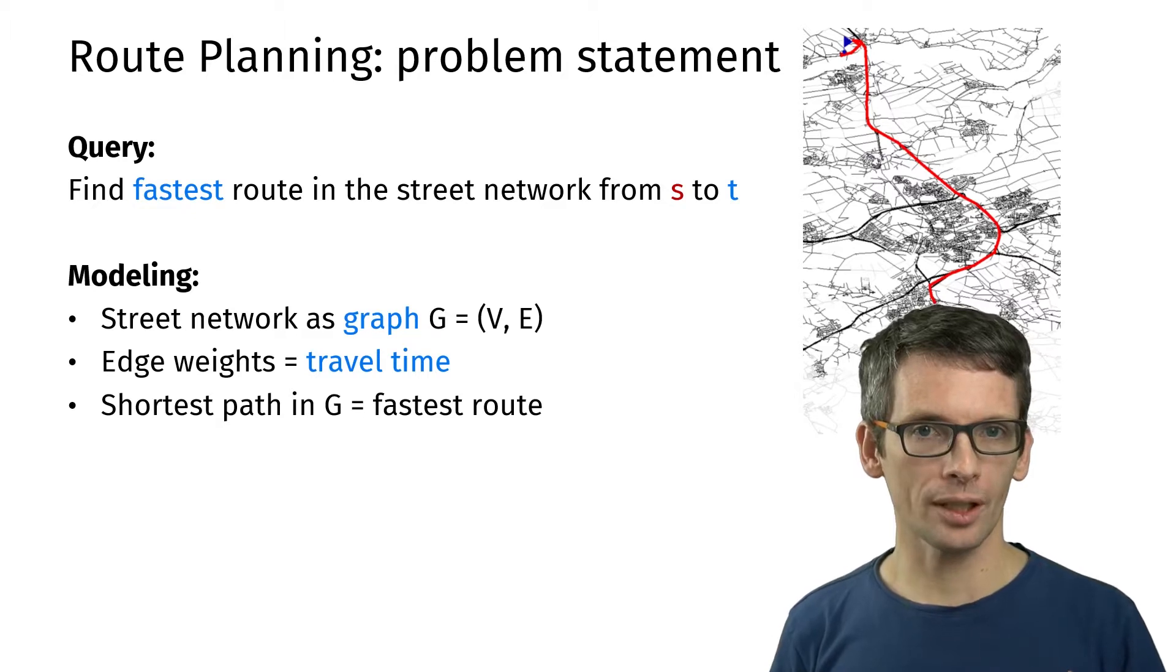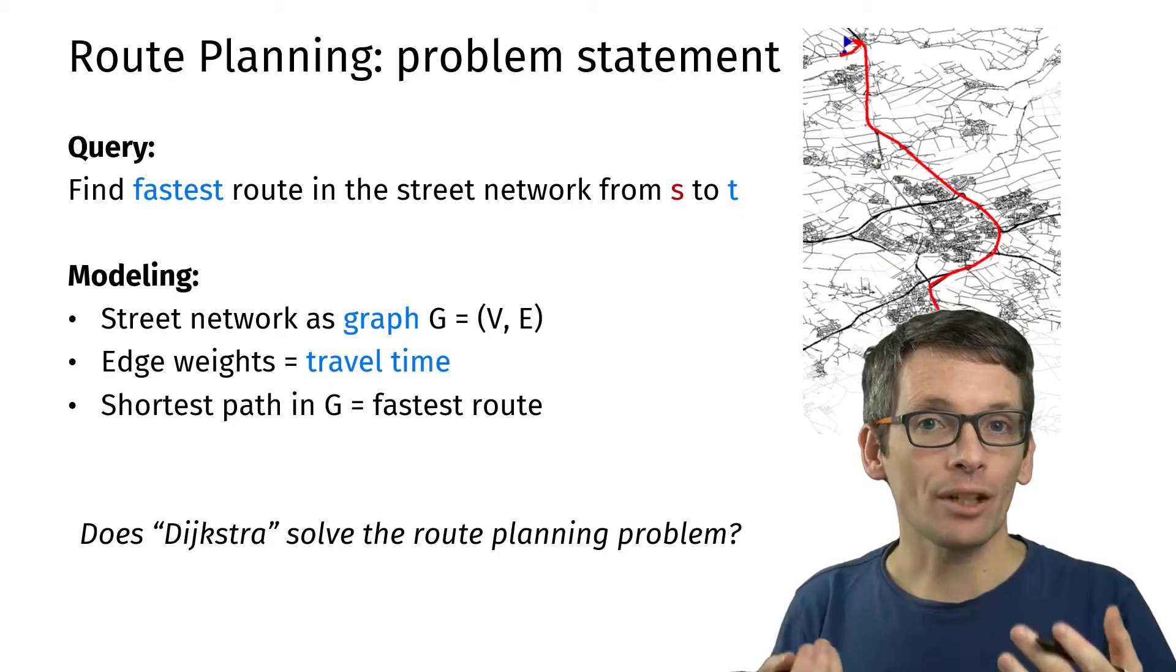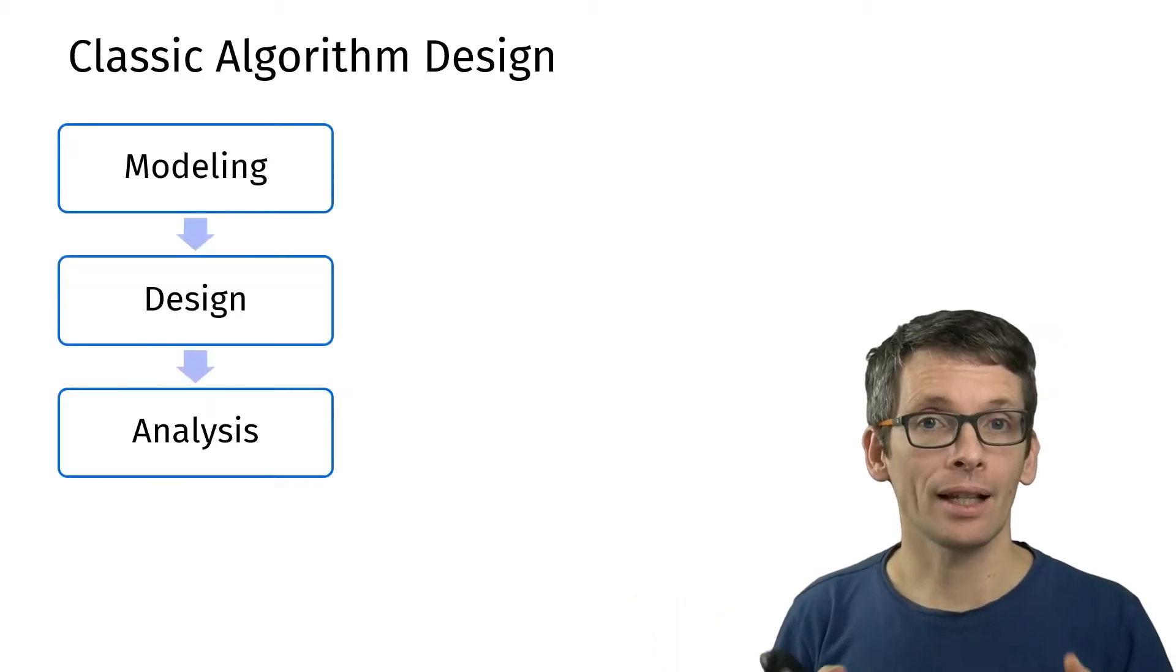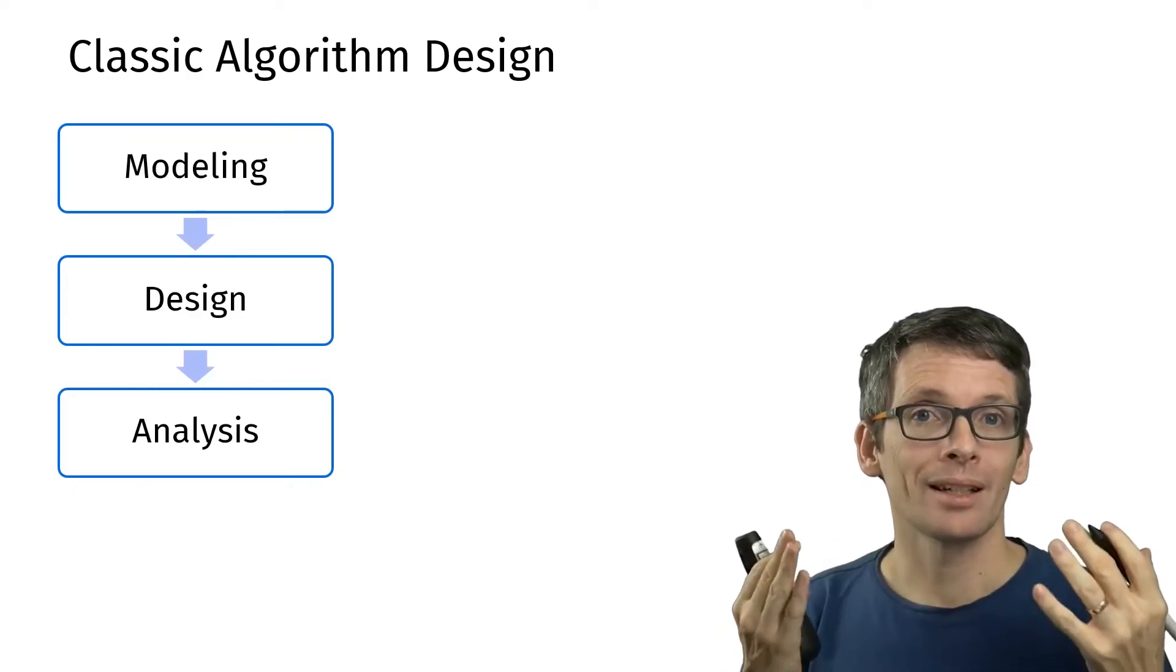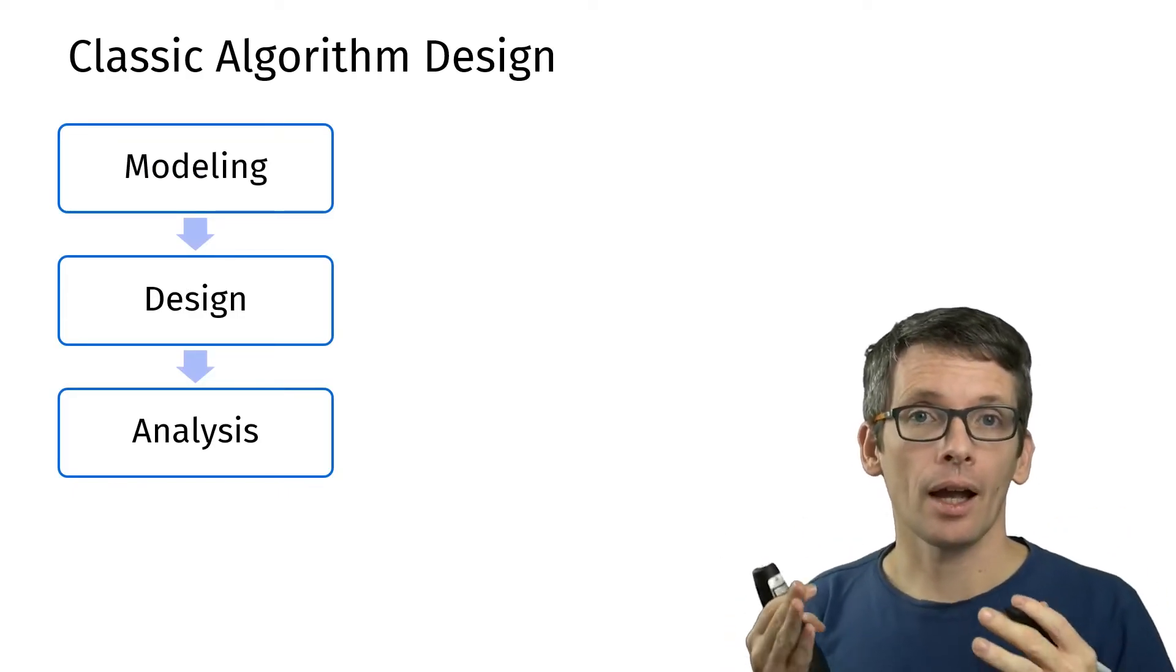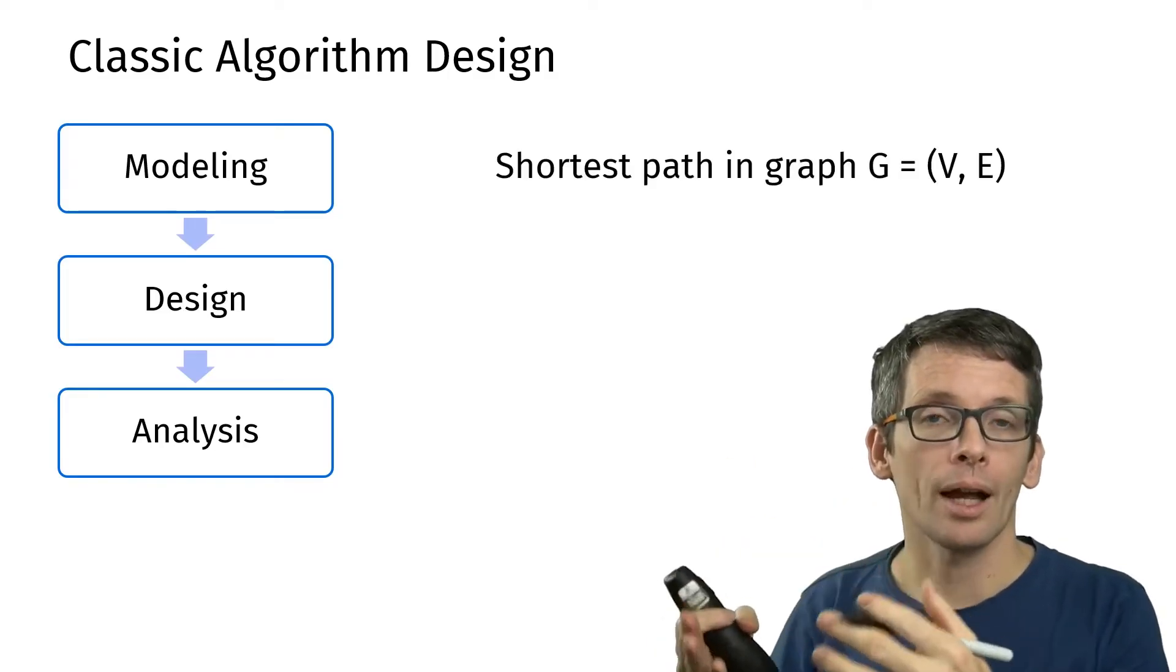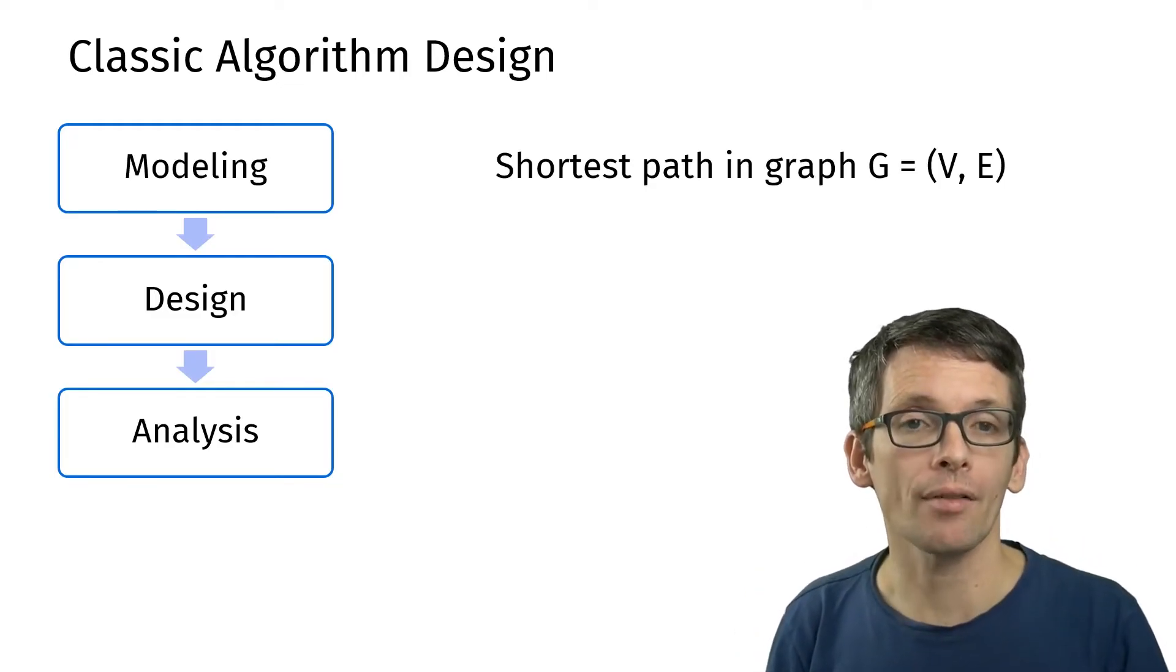This very much looks like what we've seen when we were talking about Dijkstra's algorithm. So the natural question is, does Dijkstra's algorithm solve the route planning problem? Let's first take what I will call the classic algorithm design perspective. We start with modeling the problem as a graph problem, namely finding the shortest path in a graph.